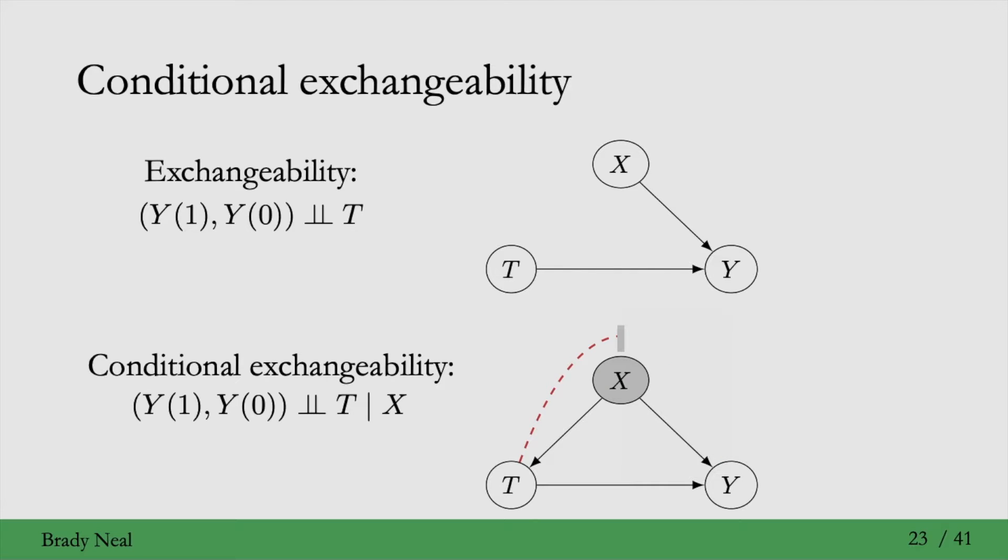Graphically, that means that when we condition on X, we block the confounding. We'll see this more concretely next week when we study graphical causal models.